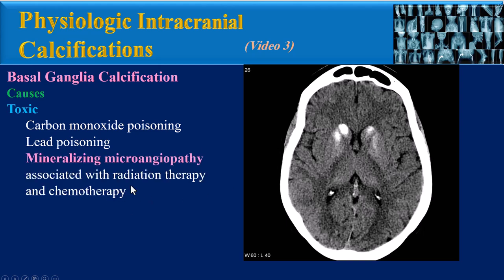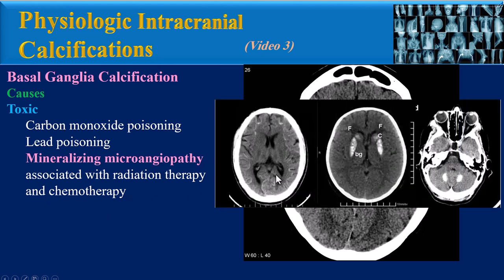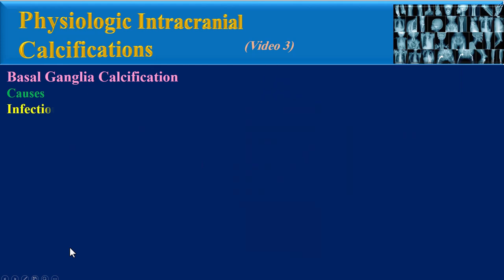Toxic causes of basal ganglia calcification include carbon monoxide or lead poisoning, and mineralizing microangiopathy associated with radiation therapy and chemotherapy. These images relate to a patient with mineralizing microangiopathy. It can affect the brain widely, with typical sites involved including the corticomedullary junction regions, lentiform nuclei of the basal ganglia, and also the dentate nucleus of the cerebellum. Another toxic cause is nephrotic syndrome.